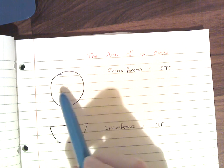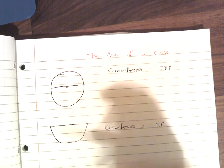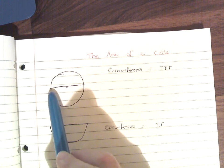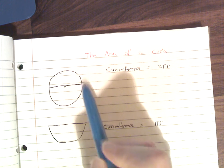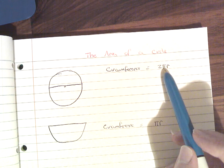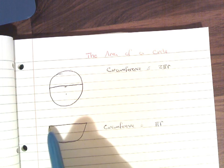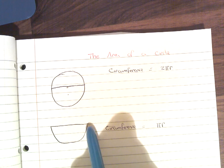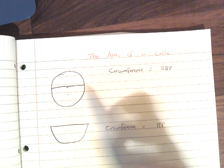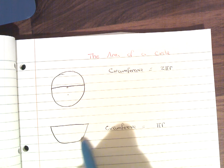Now, imagine I was to split this circle in half. Another way to think about it is we're getting the distance from here to here and from here to here — hence 2 pi r. Now, imagine if I just wanted to get the distance of just one side of that, say from here all the way around to here. So if 2 pi r gives me both sides, then just pi r is going to give me the circumference of just one half.